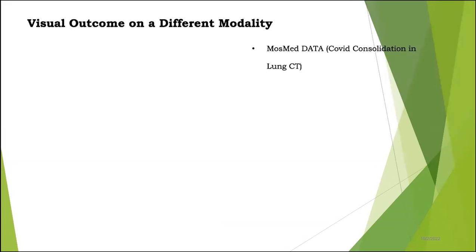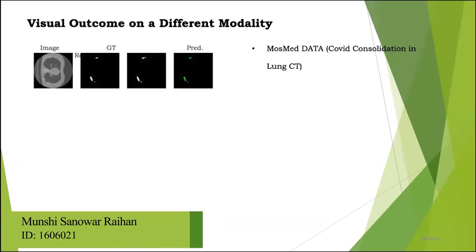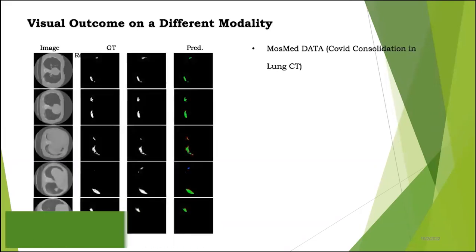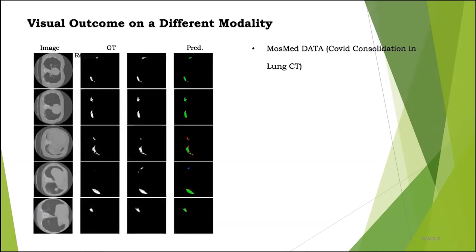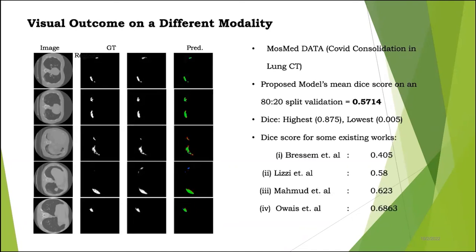We also tested our method on a different modality — CT scans — showing visual results on the MosMed COVID consolidation lung dataset. Our proposed method achieves a mean DICE score of 0.5714, with the highest validation score of 0.875 and the lowest of 0.005. Although CT scan data was not in mind when designing the algorithm, it achieves a reasonably good score in this domain, though it could not beat existing state-of-the-art works.